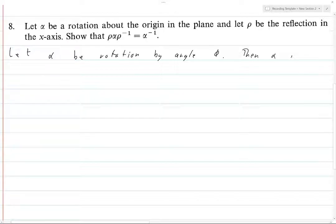Then alpha is given by the map that sends R times e to the i theta to, and I'm going to put a line here which means that this is an element and it's being sent to, R e to the i theta plus i phi.